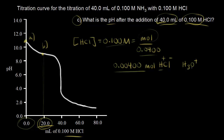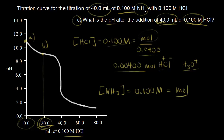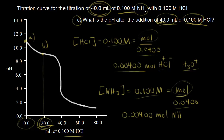How many moles of ammonia did we start with? The concentration of ammonia was 0.1 molar, and molarity is moles over liters. We started with 40 milliliters, which is 0.04 liters. So it's the same calculation: 0.1 times 0.04 gives us 0.004 moles of NH₃.